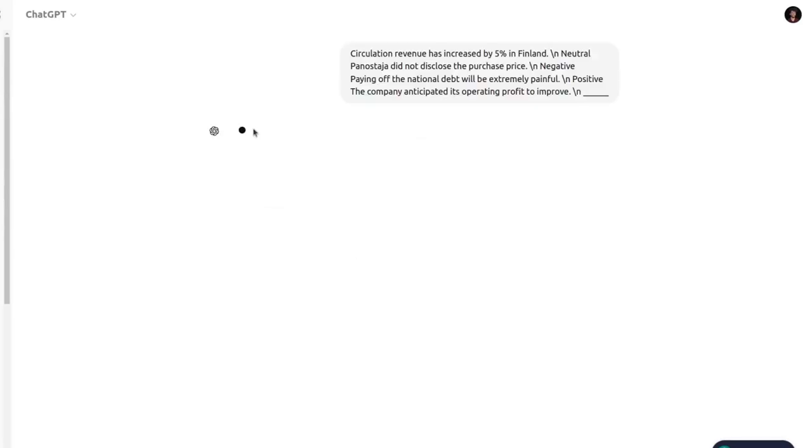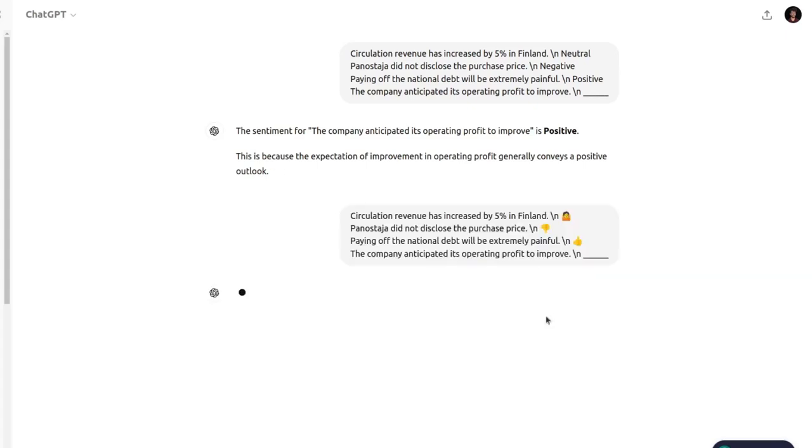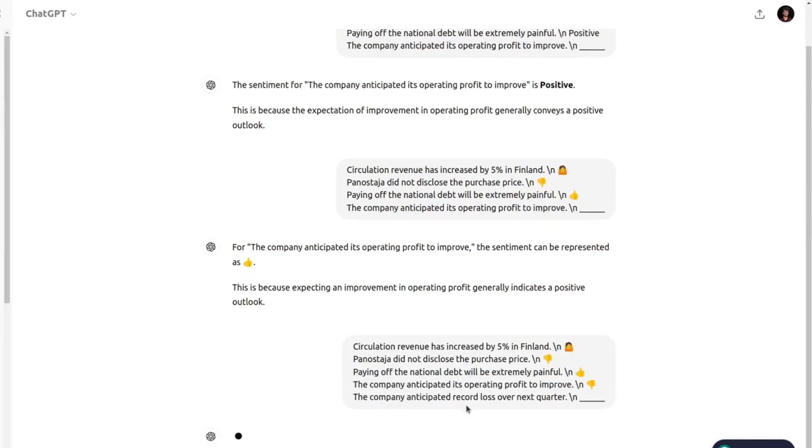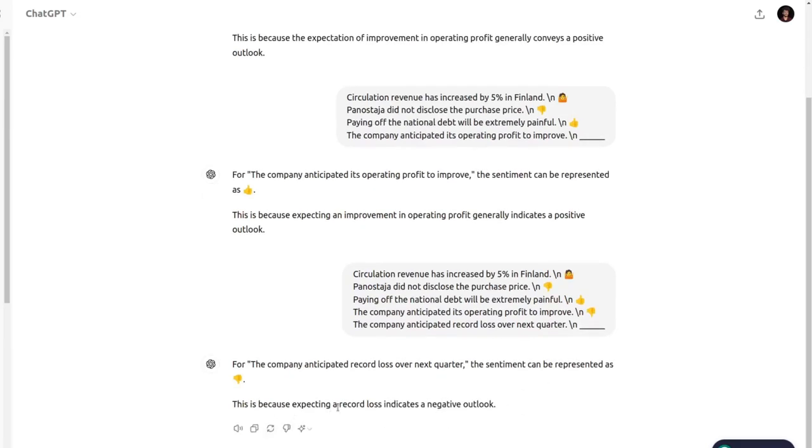One thing that large language models are very good at is in-context learning. You give a few input and output examples to a model, and afterward you ask it to complete a task. Surprisingly, even by not being specifically trained for it, the model is able to intelligently complete it. How are these models able to do that and what is exactly in-context learning?